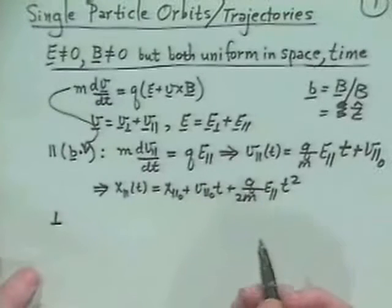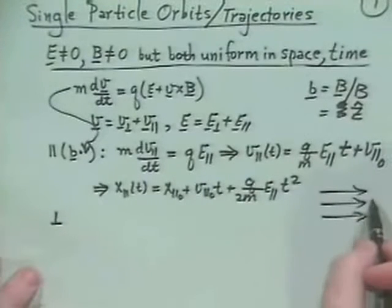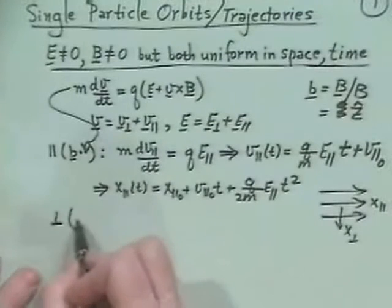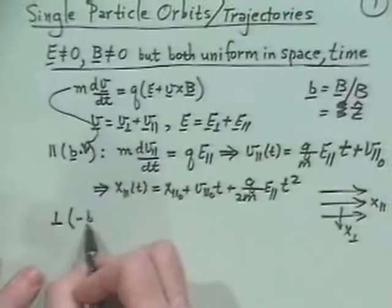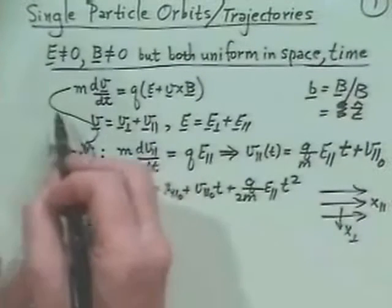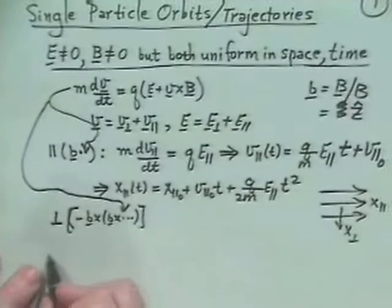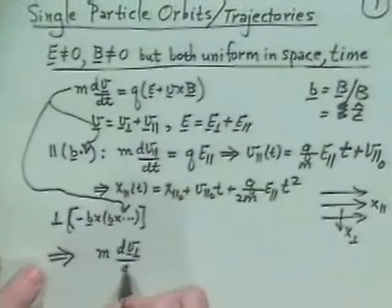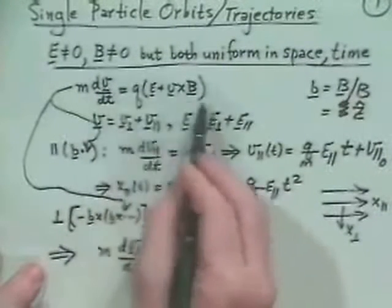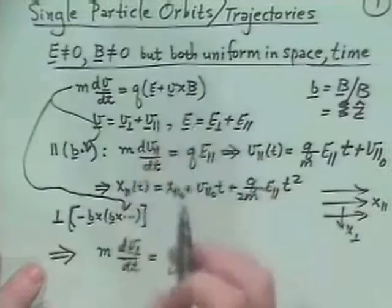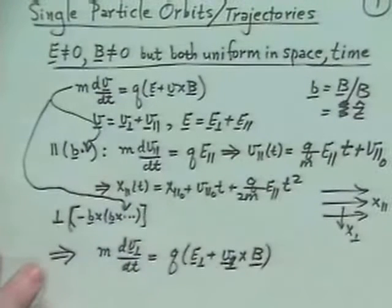Our next job is to dissect out the perpendicular motion, perpendicular to the magnetic field. To take the perpendicular component, we use the back-cab rule — we take minus B cross (B cross the equation). That gives the perpendicular equation: M dV_perp/dt equals the perpendicular force, which is q·E_perp plus V_perp cross B.